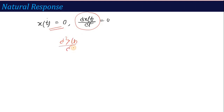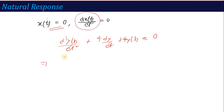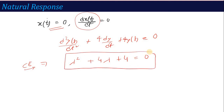The equation becomes d²y(t)/dt² + 4·dy(t)/dt + 4y(t) = 0. We convert this into the characteristic equation, where this term represents λ², this term represents λ, and the constant term gives λ² + 4λ + 4 = 0. This is a quadratic equation, and you can calculate the roots — better to use a calculator here.